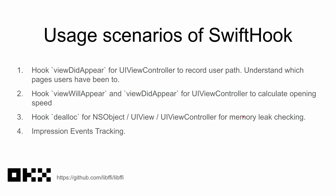Let's talk about some use cases for hooking. You can hook `viewDidAppear` for UIViewController to record user paths and understand which pages users have visited. You can also hook `viewWillAppear` and `viewDidAppear` to calculate page open speed and measure performance. You can also hook methods on objects or view controllers for memory leak checking. And you can implement impression event checking, which is the second topic of my sharing.